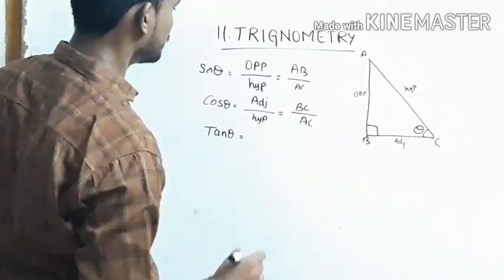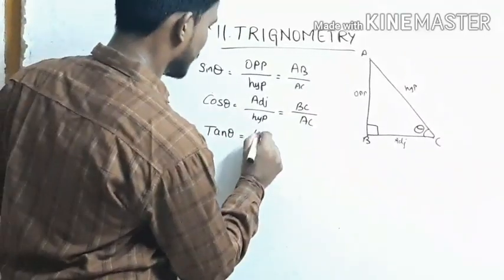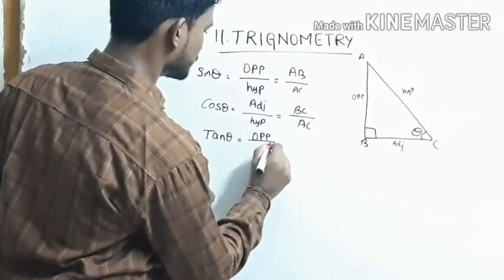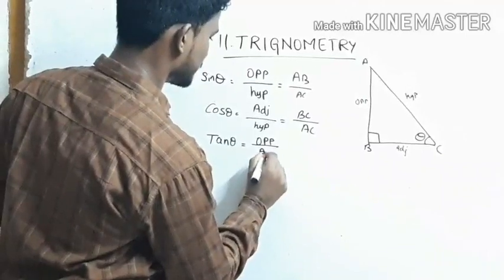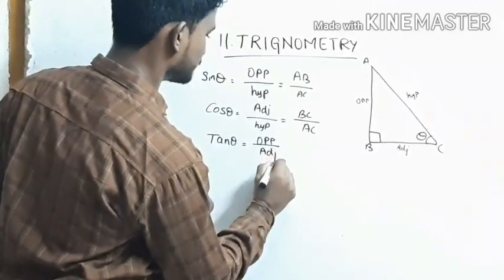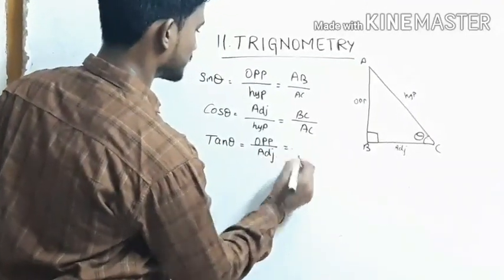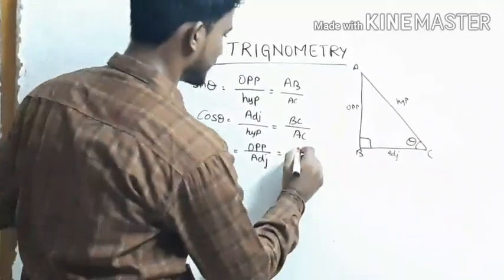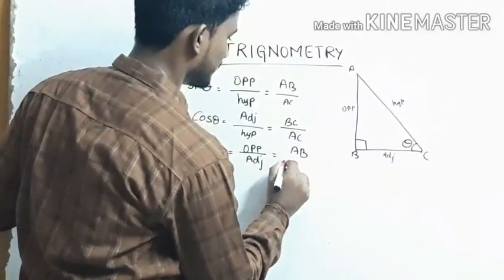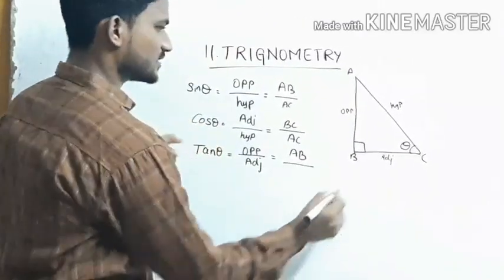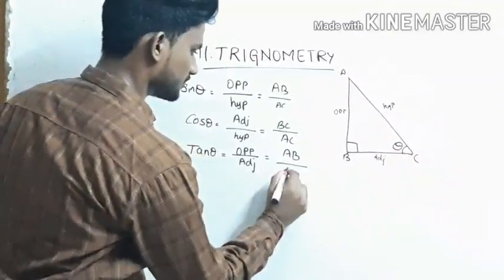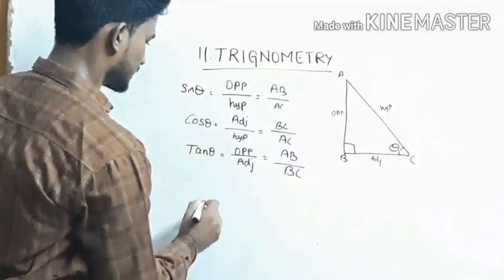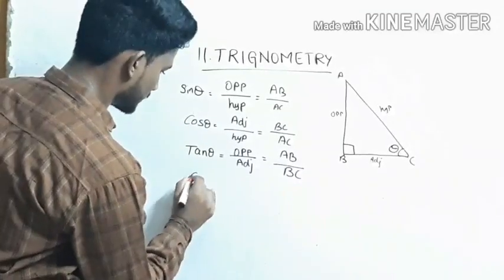Tan theta equals to opposite by adjacent. This is equal to opposite AB by adjacent BC.